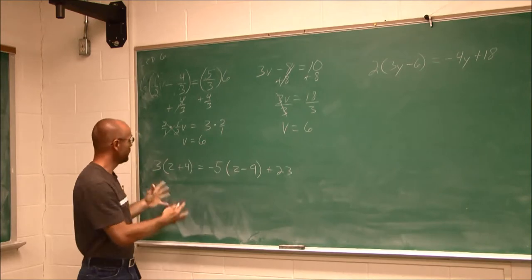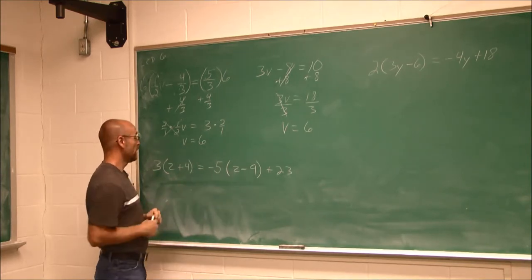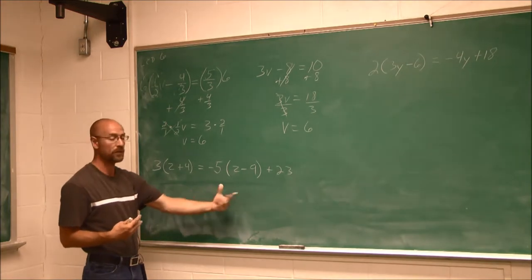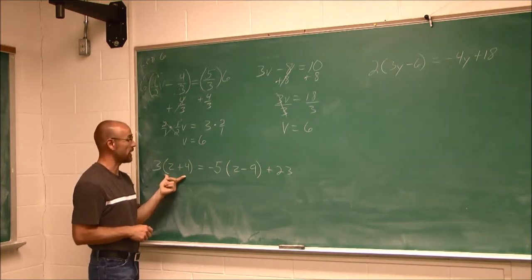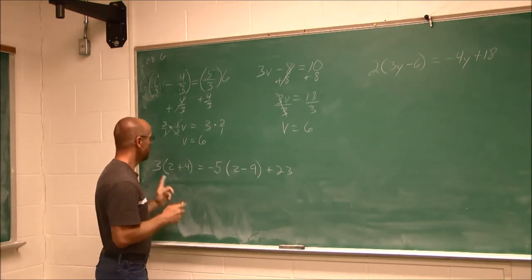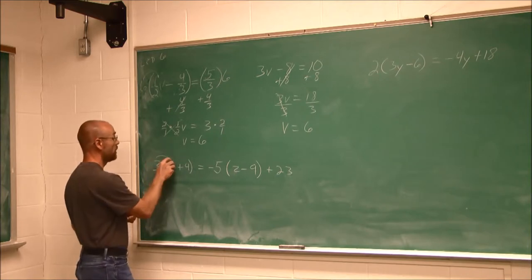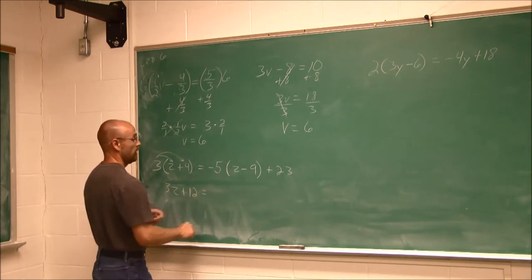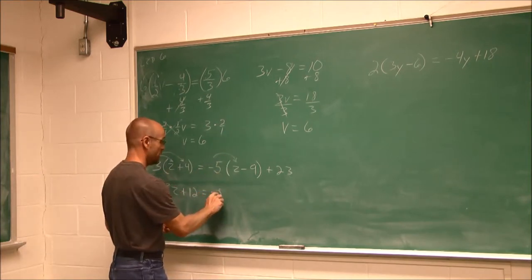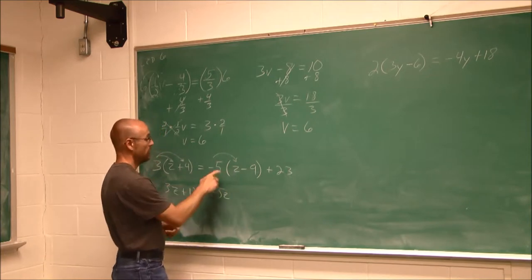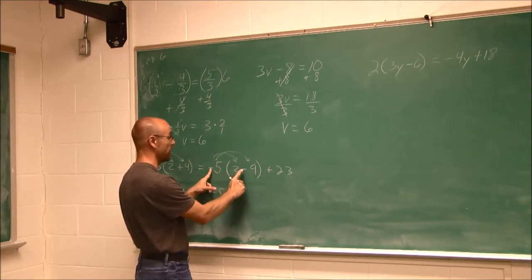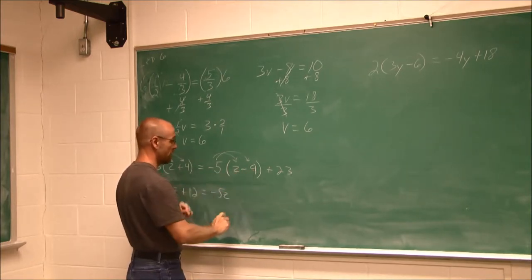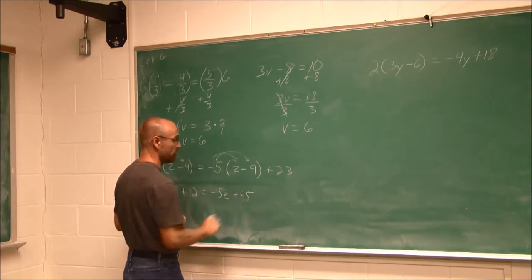All right, let's look at this example. Now, it's looking a little more intimidating. There's more operations. And now we're introducing parentheses. But we're still going to do the same thing. The first thing I'm going to do is eliminate any parentheses. I identify there's parentheses here. So I can use the distributive property to eliminate them. 3 times z and 3 times 4. Negative 5 times z, negative 5 times a negative 9. Watch those signs. A negative times a negative is positive. 5 times 9 is 45. So we get a positive 45.